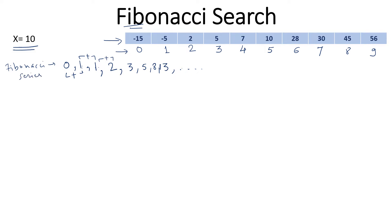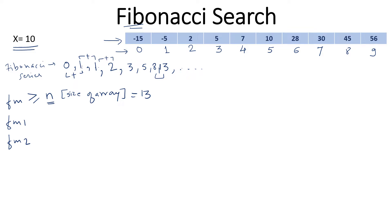Now, how do we apply this Fibonacci series for Fibonacci search? We start by computing a number we can name fm, which is the smallest Fibonacci number greater than n, where n is the size of the array. Here the size of the array is 10, so 13 becomes fm. The next number fm1 is 8, which is previous to fm, and fm2 is 5, two positions before fm.